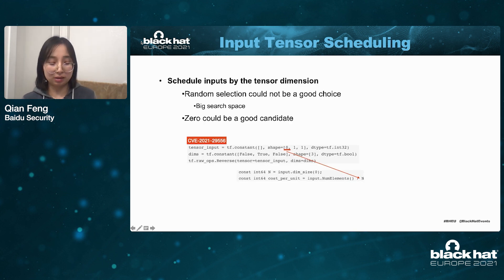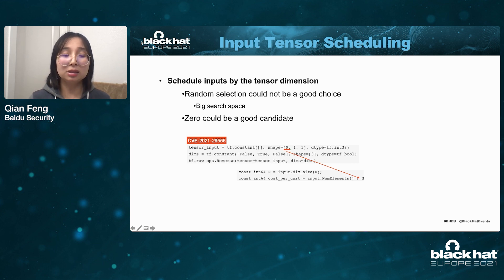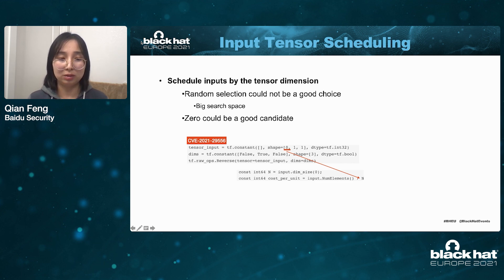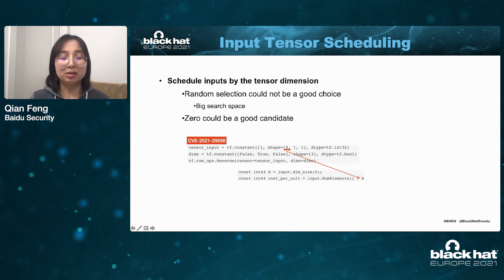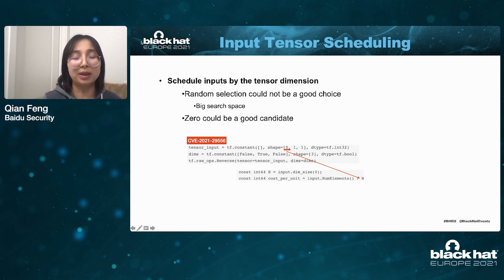We can also schedule input tensors by their tensor dimension. Again, random selection is not a good choice because tensor dimension is an integer with a large search space. Here is a hint: dimension zero could be a good candidate — we find many bugs in TensorFlow caused by this. For example, if the input tensor has a zero dimension and we use it as input for a reverse operator, it causes issues because the internal design does not consider zero, still using it as a divisor, causing a divide-by-zero error.